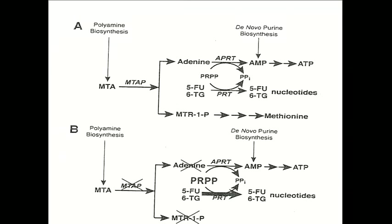What I'm going to talk about is this enzyme called methylthioadenosine phosphorylase. It's kind of an important enzyme because the substrate methylthioadenosine is generated from polyamine biosynthesis.